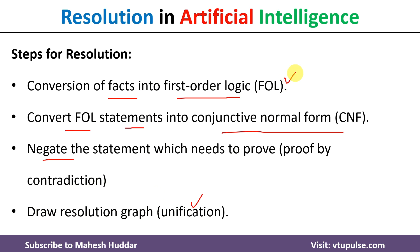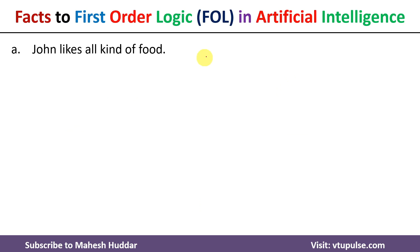In this video I will discuss the first step — conversion of given facts into first order logic, that is FOL. We have been given some set of facts, and I will discuss how to convert those particular facts into first order logic in artificial intelligence.